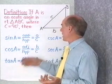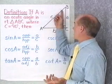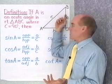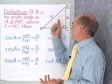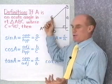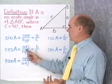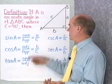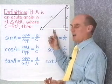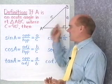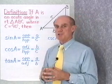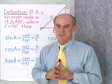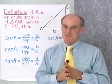I could have just as well defined the trigonometric functions for angle B using the same definitions. The sine of B is the opposite side divided by the hypotenuse, the cosine of B is the adjacent side divided by the hypotenuse, and the tangent of B is the opposite side divided by the adjacent side. Let's now go to the board and work some problems involving this new definition.